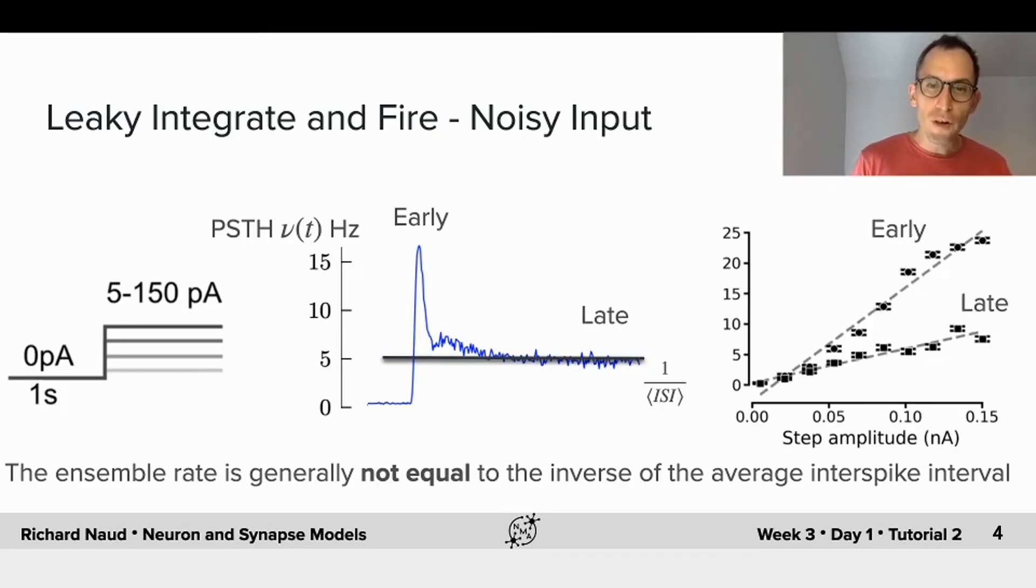We can show the input-output function of both the early and the late component, as a function of the input amplitude, and you see that the two diverge for strong input, and that the early, the ensemble rate, can be much higher than the inverse of the inter-spike interval. It can also go lower in some conditions.